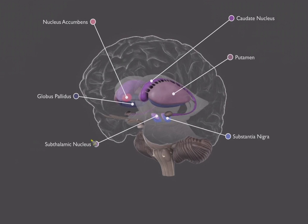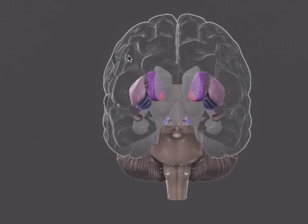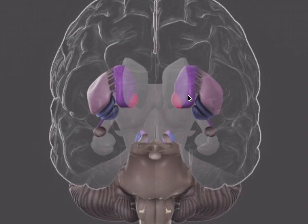The globus pallidus is this underneath structure - you can see it right here underneath the putamen. At the end of the tail of the caudate nucleus we have the amygdala, which is not highlighted here. And then underneath all of this we have the subthalamic nucleus and the substantia nigra. We can also see the internal globus pallidus, the external globus pallidus, and then the putamen. This is a chunk of the caudate nucleus called the nucleus accumbens.